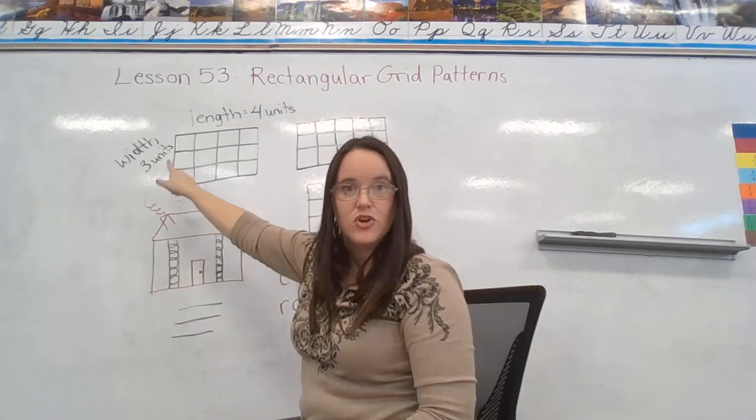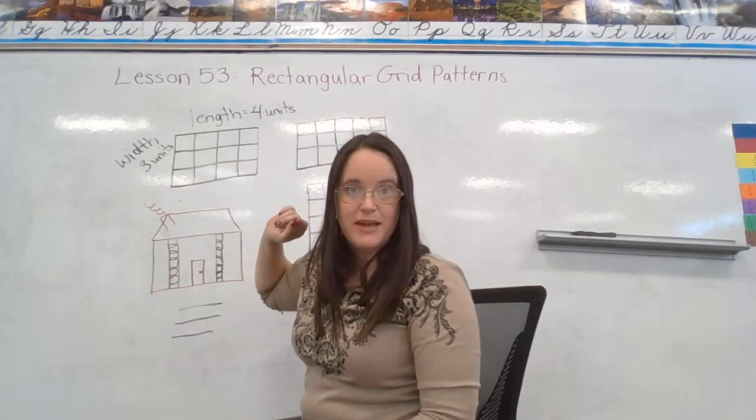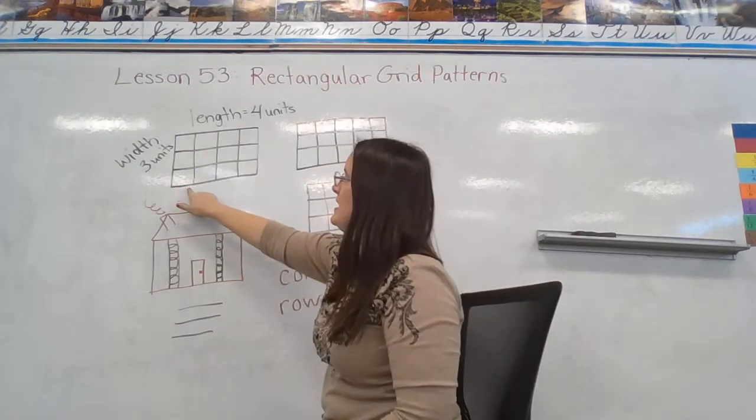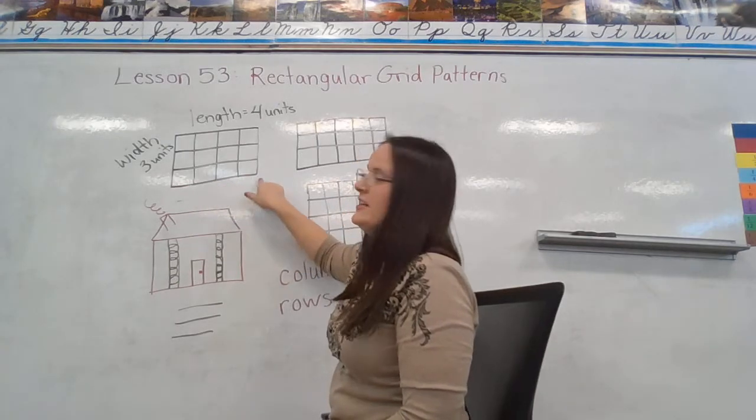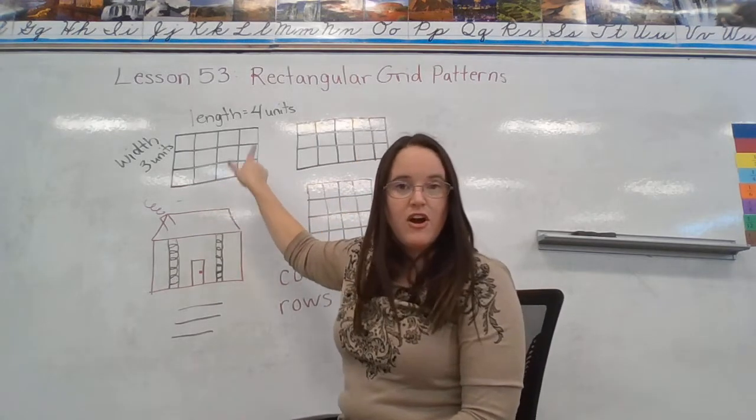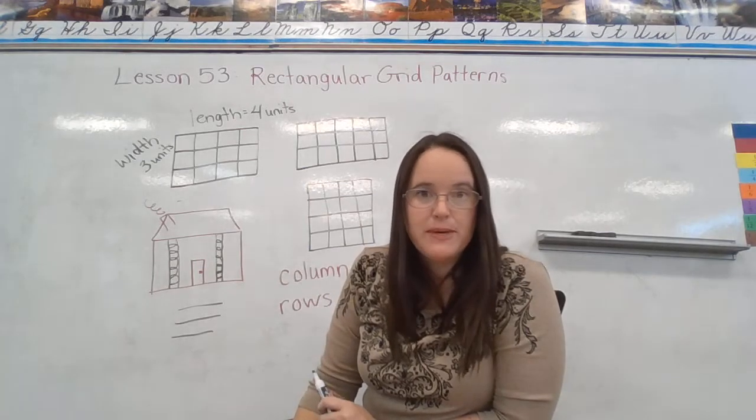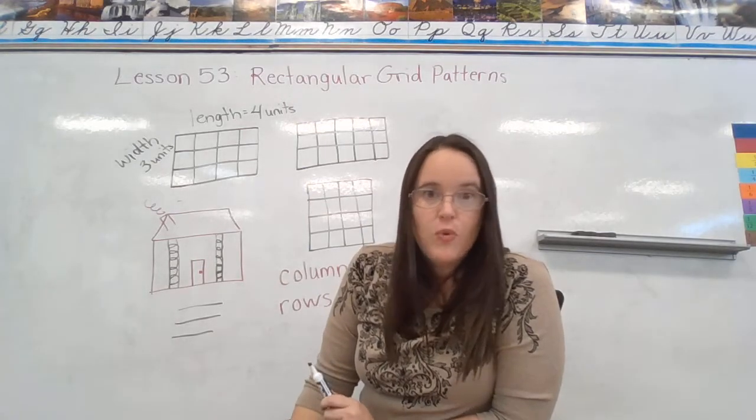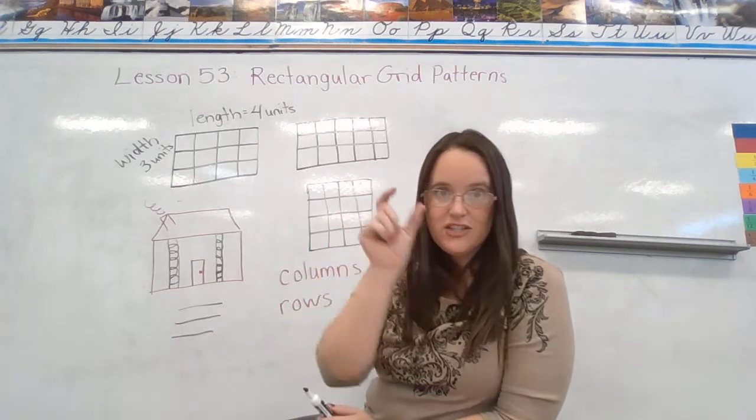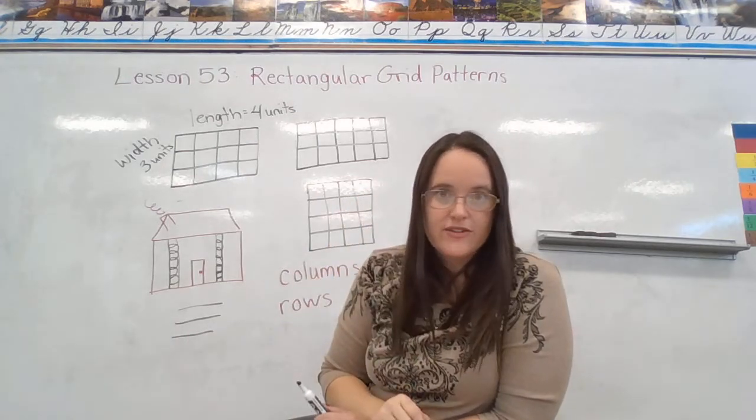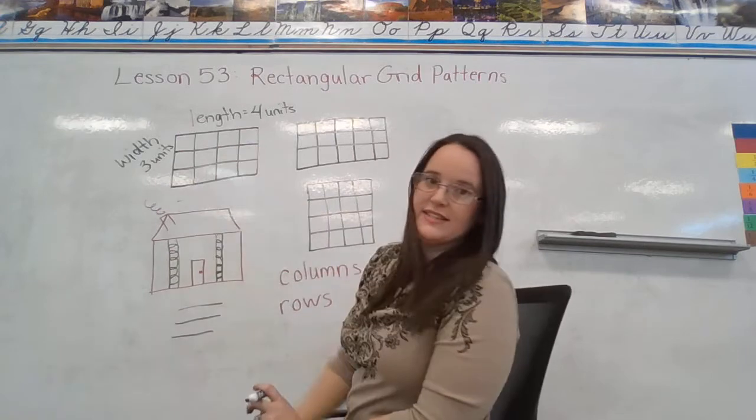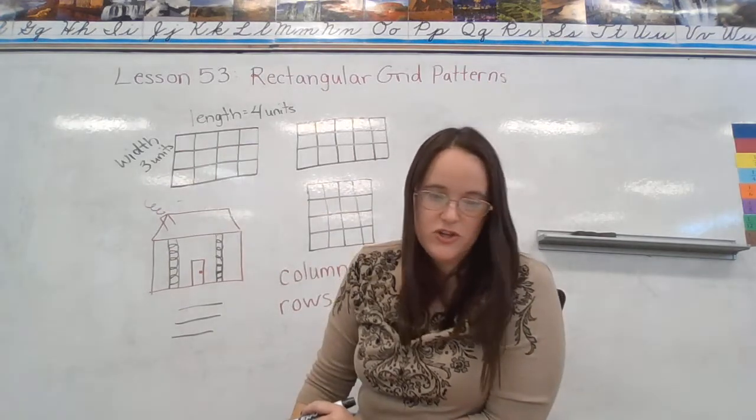So I can just go across the columns counting by three. And I could say three, six, nine, twelve. There are twelve square units inside that picture. We call it a square unit because each of them are little squares. So twelve square units inside this picture.